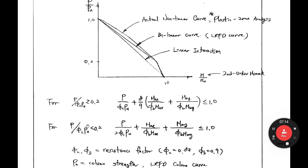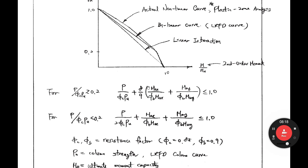In LRFD code design we use this bilinear curve, represented by two equations. When P over φcPn is greater than or equal to 0.2, one equation applies; when it is less than 0.2, the other equation applies. These are the LRFD interaction equations for designing beam-columns. The terms MNUX and MNUY are moment capacities about the x and y axes respectively, and MUX and MUY are second-order moments about each axis.